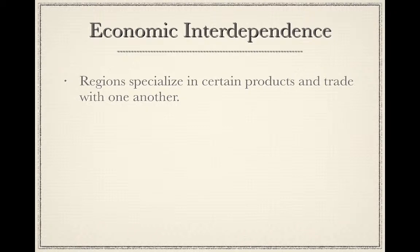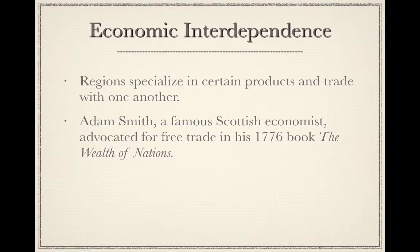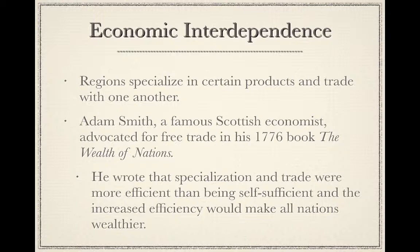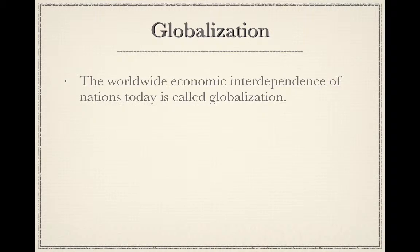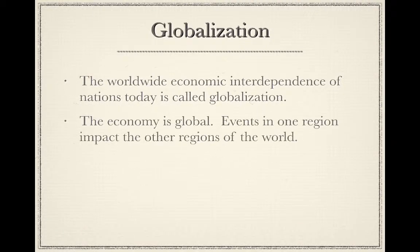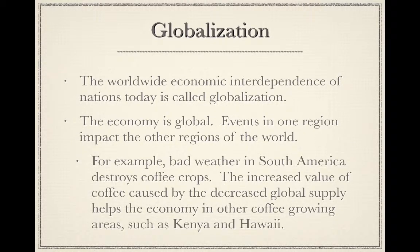Regions specialize in certain products and trade with one another. Adam Smith, a famous Scottish economist, advocated for free trade in his 1776 book The Wealth of Nations. He wrote that specialization and trade were more efficient than being self-sufficient, and that the increased efficiency would make all nations wealthier. The worldwide economic interdependence of nations today is called globalization. For example, bad weather in South America that destroys coffee crops increases the value of coffee due to decreased global supply, which helps the economy in other coffee-growing areas like Kenya or Hawaii.